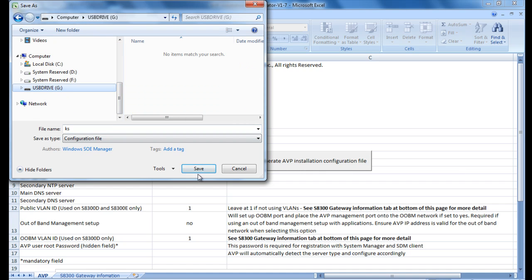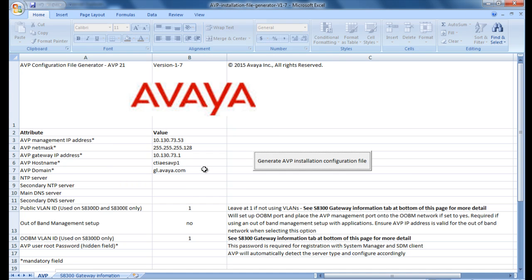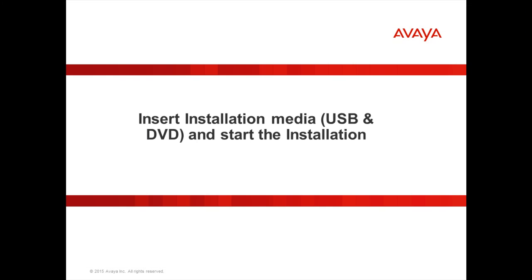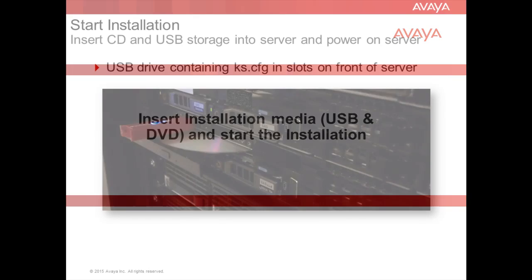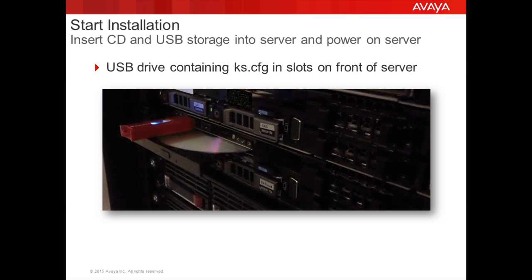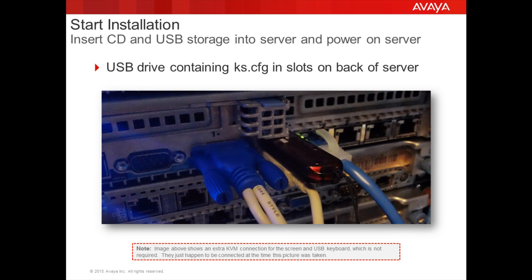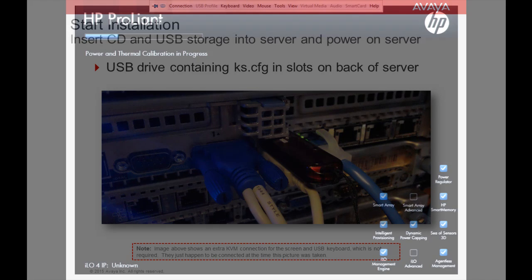Now that you have the correct hardware and software and you have completed the configuration of the kickstart file, you are ready to proceed with the installation. Insert the USB flash drive and DVD containing the AVP image into the server, then power on the server. You can insert the USB flash drive into any available USB slot on the front or the back of the server. The images shown here are examples from a Dell R620. You are not required to connect a monitor and keyboard to the server for this installation. Since you have put all the configuration on the kickstart file, the installation will proceed on its own. If you are interested in monitoring the progress of the installation, there is no harm in connecting a monitor.